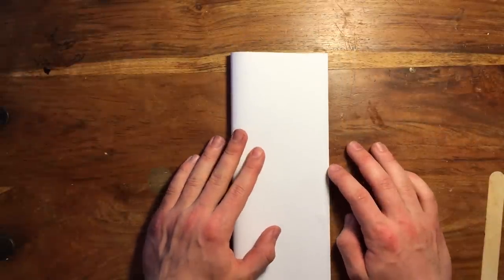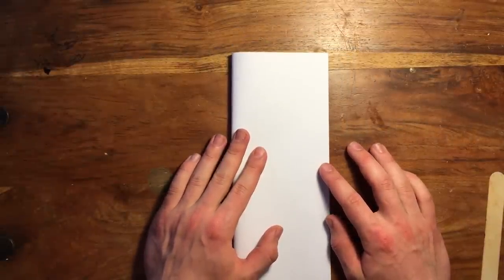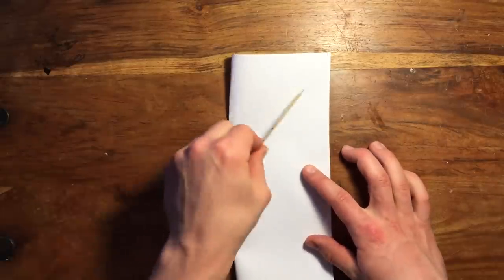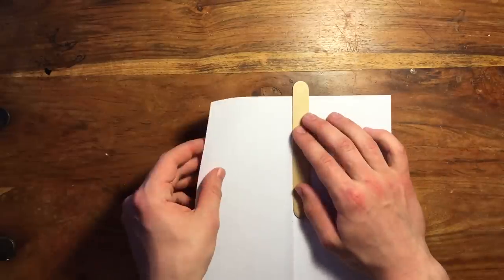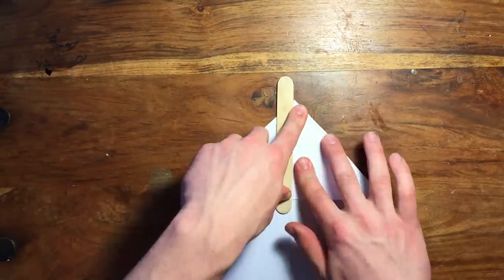Okay, so grab a piece of 8.5 by 11 and fold it in half the long way. Now remember, the more precise you are, the better it will fly. That's why it's a good idea to use something like a popsicle stick to crease the paper. Next step is to fold down the top corners using the popsicle stick as a guide.